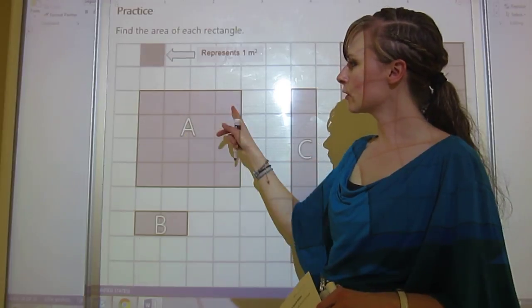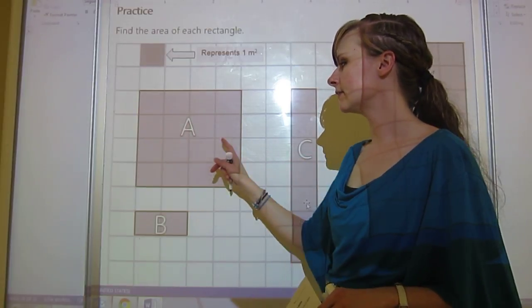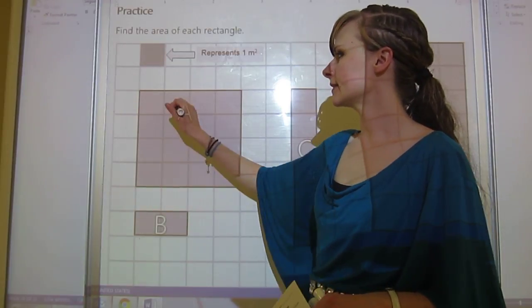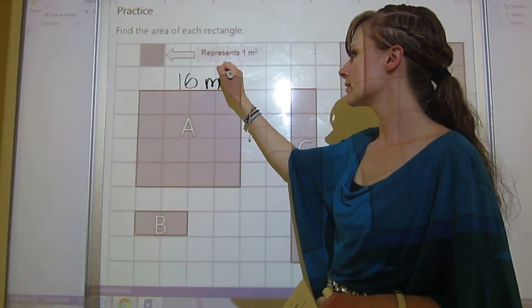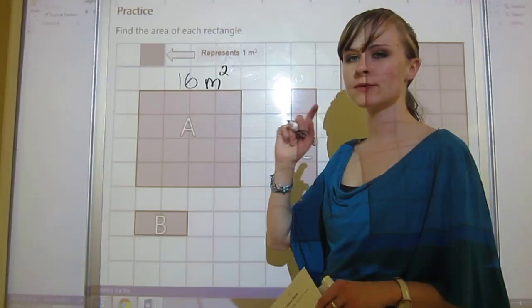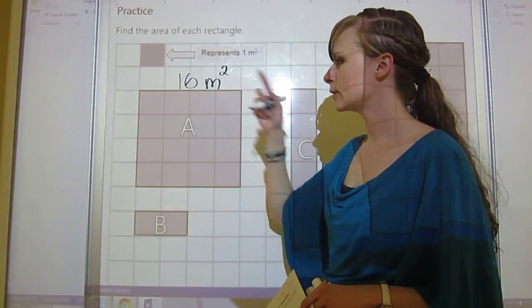If I counted 1, 2, 3, 4, 5, 6, 7, 8, 9, 10, 11, 12, 13, 14, 15, 16, I would get 16 meters squared. I could have also counted 4 times 4 equals 16.